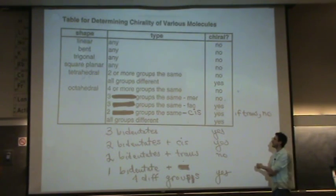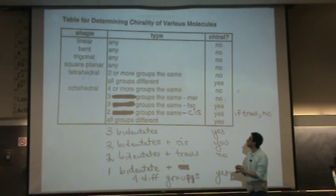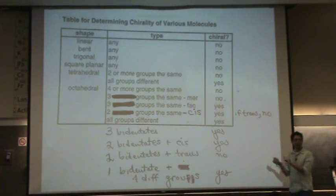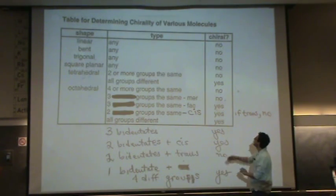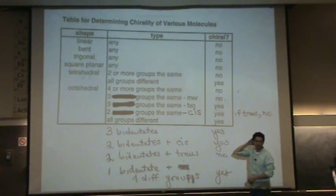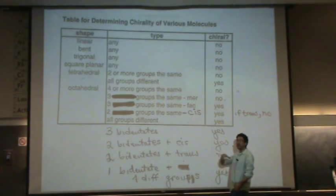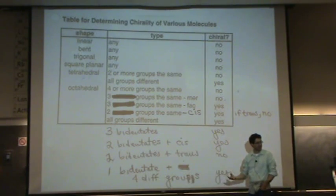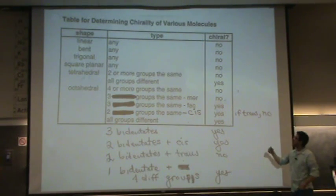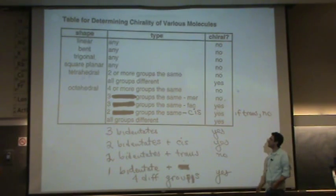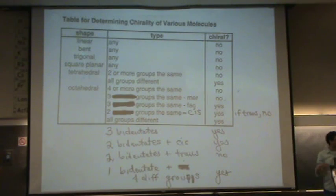But if you have three groups the same and those are in the fac (back) position geometrically, and all the other three ligands are different from each other and from the first group, then yes, it will be chiral. So again, if three groups are the same, all the rest are different, and those three same groups are in the fac (back) position, yes, it will be chiral. For the octahedral, chirality starts at three ligands being the same with the rest being different.